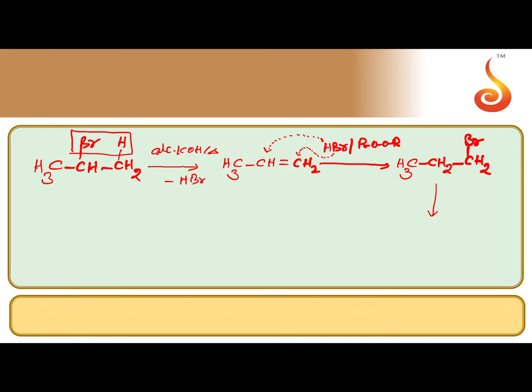After the formation of n-propyl bromide, it is reacted with sodium methoxide. Here methoxide acts as attacking nucleophile. The carbon which is holding bromine is electrophilic carbon.